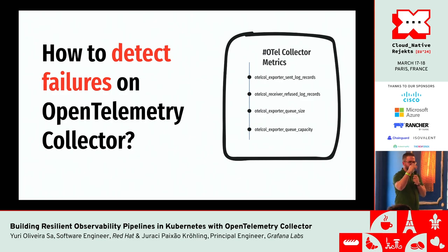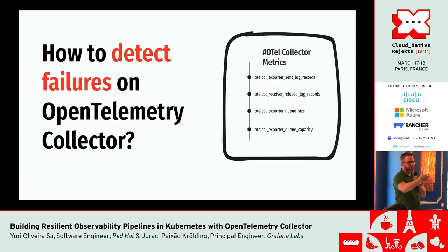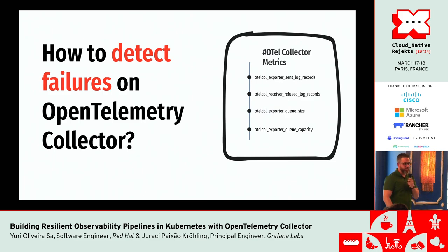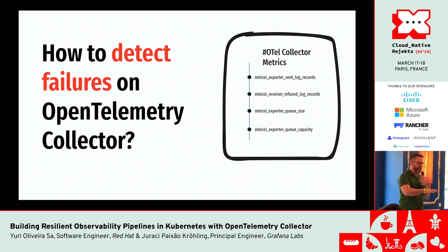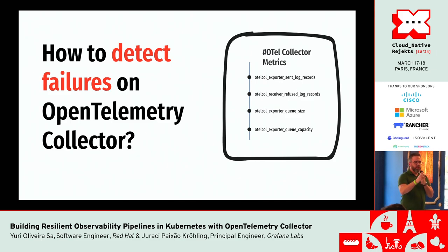Also the refused log records metric — if you have any outage in your OpenTelemetry Collector, this metric will be populated with the amount of refused logs. The queue size that Juracy explained: if there is any outage or problem in your OpenTelemetry Collector, the queue size will get increased. And the queue capacity should be related to the expected queue size in a case of outage.